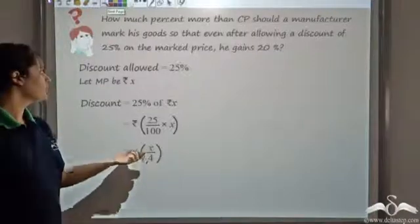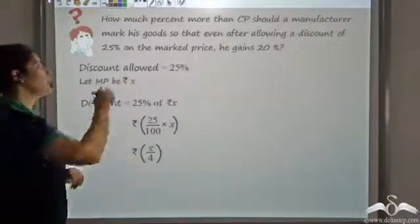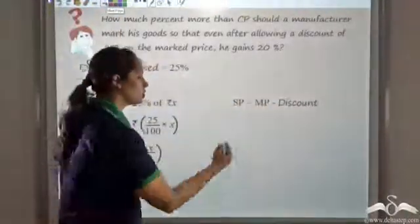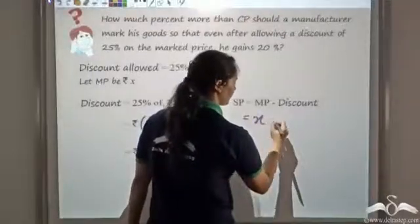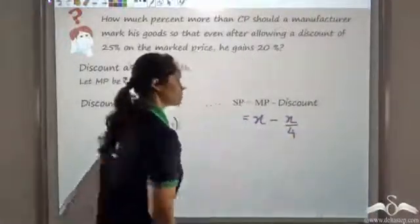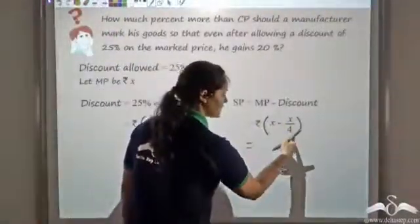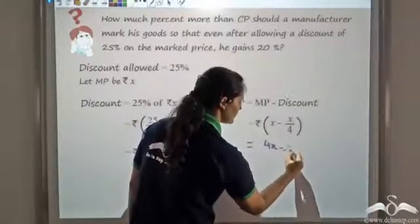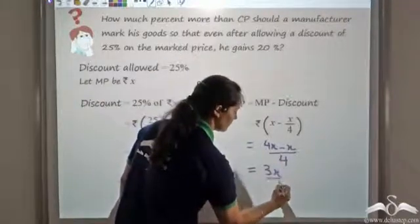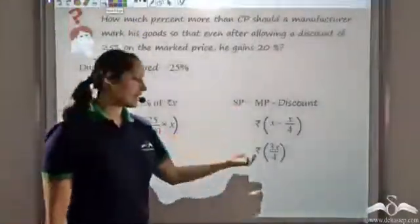Now when we know the discount and the marked price, we can find the selling price. Selling price is marked price minus discount. Marked price is X and discount is X by 4, so substituting these values we get X minus X by 4. Taking LCM as 4, this gives 4X minus X upon 4, which is equal to 3X by 4.